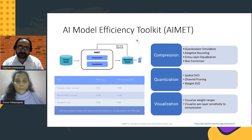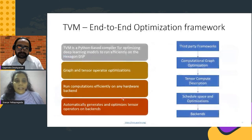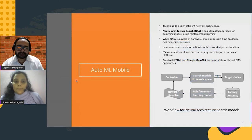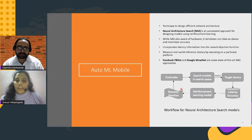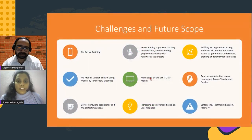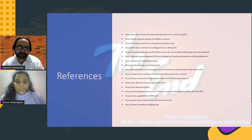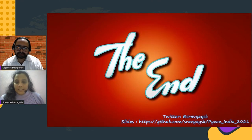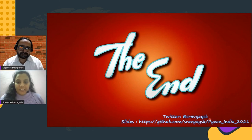TVM is a compiler-level optimization tool for optimizing graphs and operators. AutoML Mobile outputs a neural network architecture based on the hardware spec of the Android device using a reinforcement learning model. Some challenges include on-device training and battery and thermal mitigation. You can find the slides at the referenced ID and reach out on Twitter for any queries. Thank you for the wonderful talk.